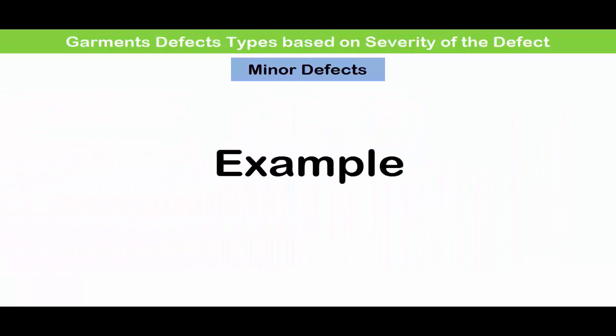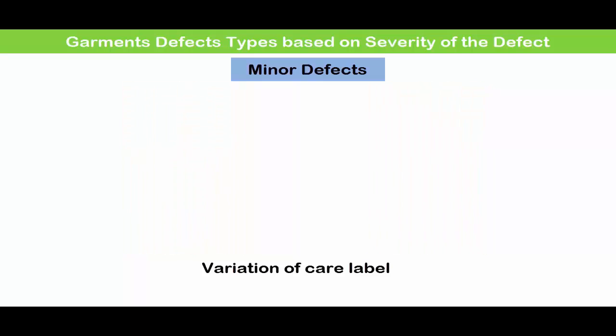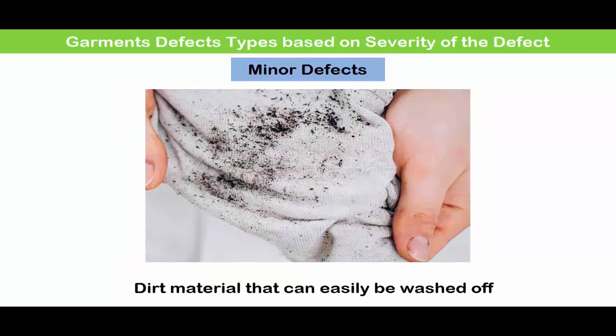Some examples of minor defects: variation of care label, and dirt or material that can easily be washed off.